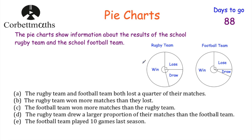Statement one: the rugby team and the football team both lost a quarter of their matches. Looking at both pie charts, the rugby team did lose a quarter and so did the football team — so that's true. Statement two: the rugby team won more matches than they lost. The rugby team won over half of their matches and lost a quarter, so they did win more than they lost — true.